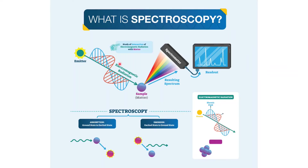First of all, let me tell you what is spectroscopy. Spectroscopy is the study of the interaction of electromagnetic radiation with matter. Electromagnetic radiation is the combination of electric and magnetic radiations. Matter is composed of atoms and molecules, which have electrons. When electromagnetic radiation interacts with matter, it gets absorbed by the electrons of the atoms, and this process is called absorption.